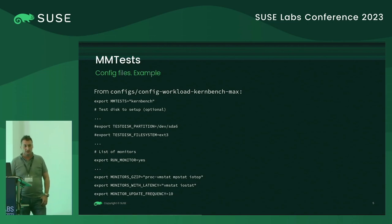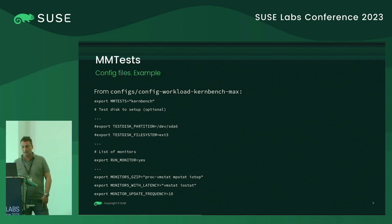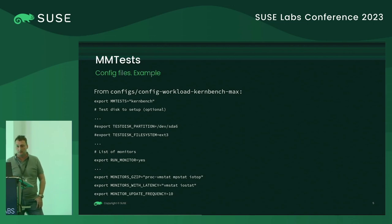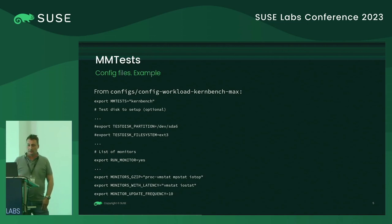One major part is configuration files. Here is an example for a benchmark called workload kernelbench max. The first line in such a configuration file specifies the actual benchmark to be run — multiple benchmarks can be specified. The first section, test setup, specifies what test disk to use and which file system to use. This section is optional; if it is not specified, then a normal file system is used in a subdirectory for test data.